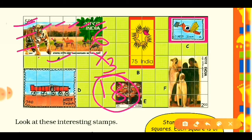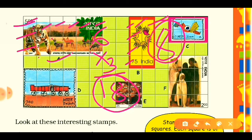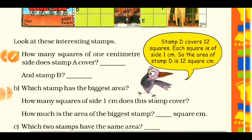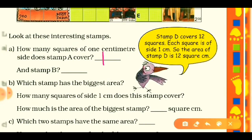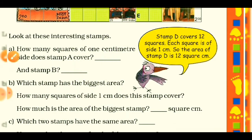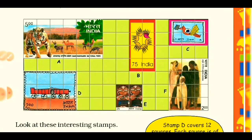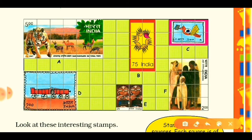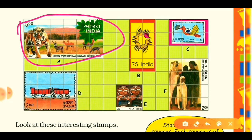Now come to stamp B. Count vertically: 1, 2, 3, 4 — and horizontally: 1, 2. So 4 × 2 = 8 squares. Stamp B covers 8 squares. So the answer: stamp A covers 18 squares and stamp B covers 8 squares. Next question: which stamp has the biggest area? You can see stamp A is the largest. Stamps D and E are not as big, so stamp A is the biggest.